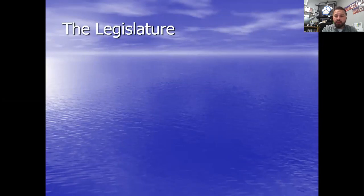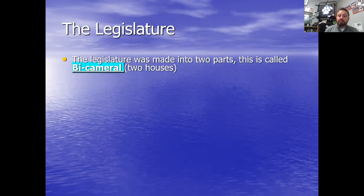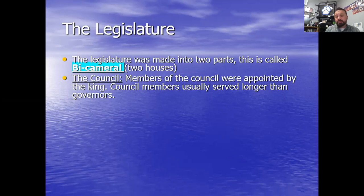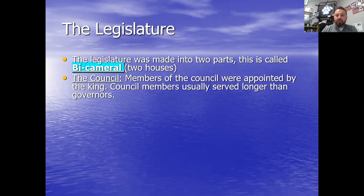The legislature was typically made into two parts — what we call bicameral, meaning two houses. Today Congress is bicameral: a House of Representatives and a Senate. There was the council, whose members were appointed by the king. They typically served longer than governors because council members would report to the king — especially when a governor looked bad. Council members were trying to move up to become governors themselves, so they were kind of the king's inside guys and watchdogs of the governors.